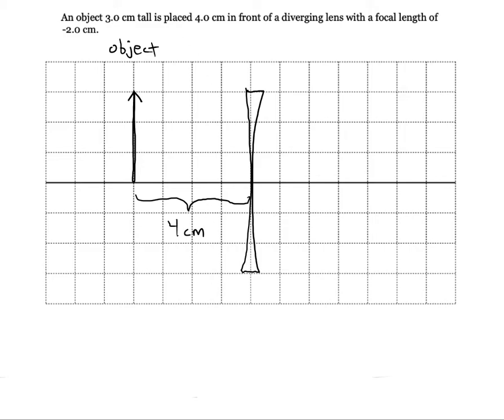Let's put our focal points down. They're just going to be 2 centimeters away from the lens on both sides. So 2 centimeters, 2 centimeters, F1 and F2.